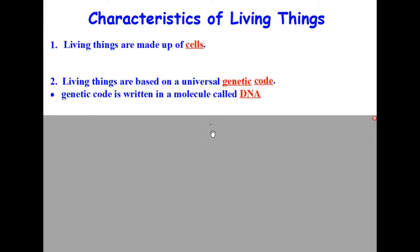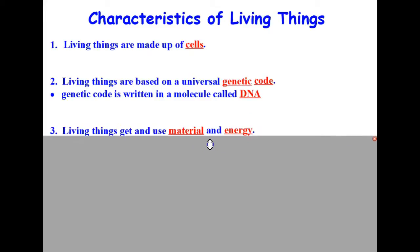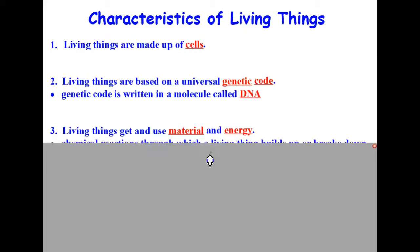The third characteristic all living things have in common is that living things get and use material and energy. All living things must take in materials and energy to grow, develop, and reproduce. The chemical reactions through which a living thing builds up or breaks down materials are called metabolism.